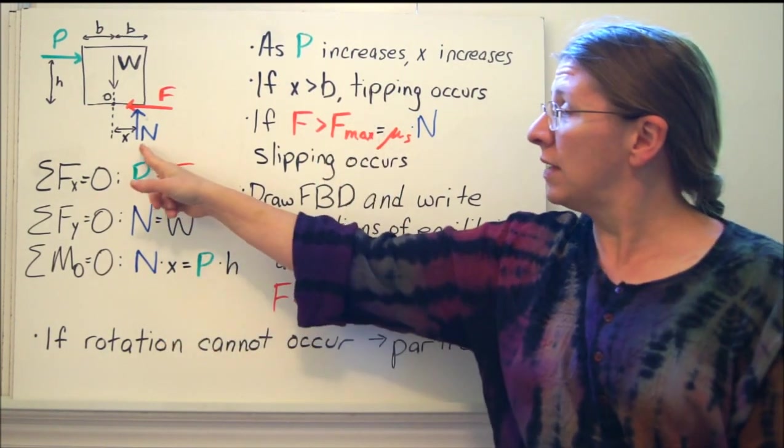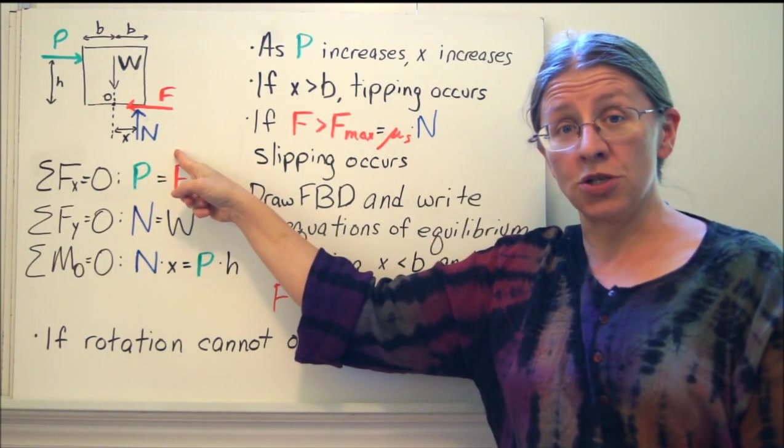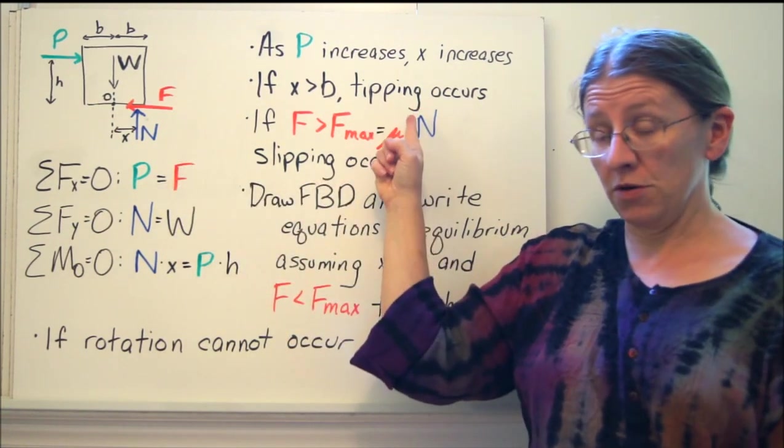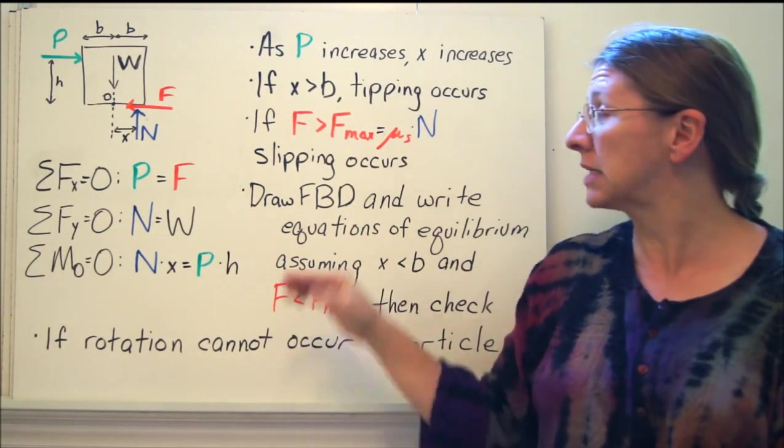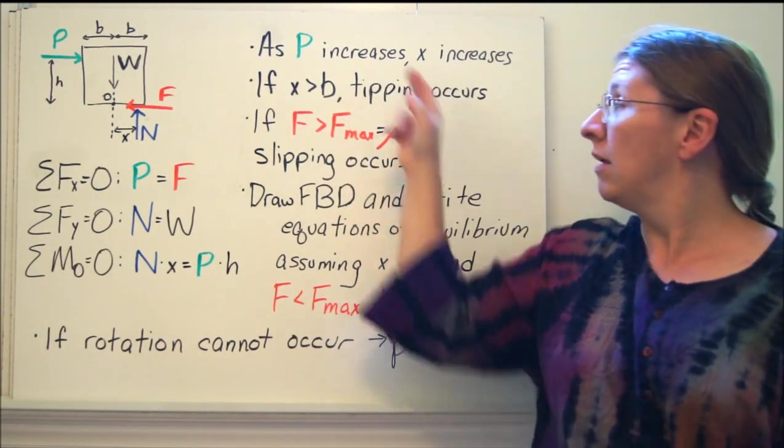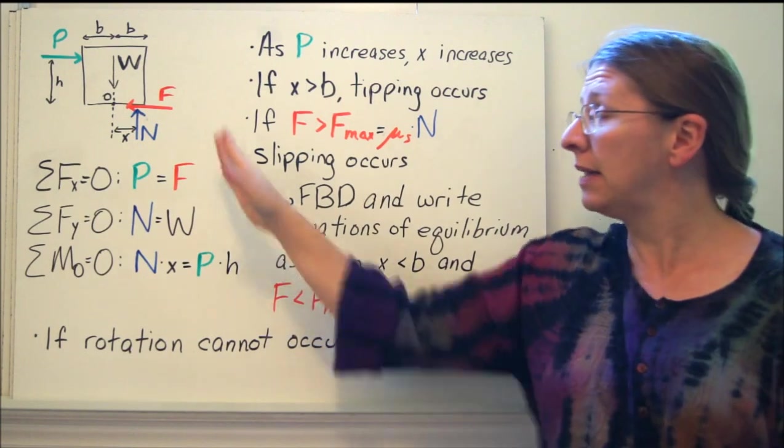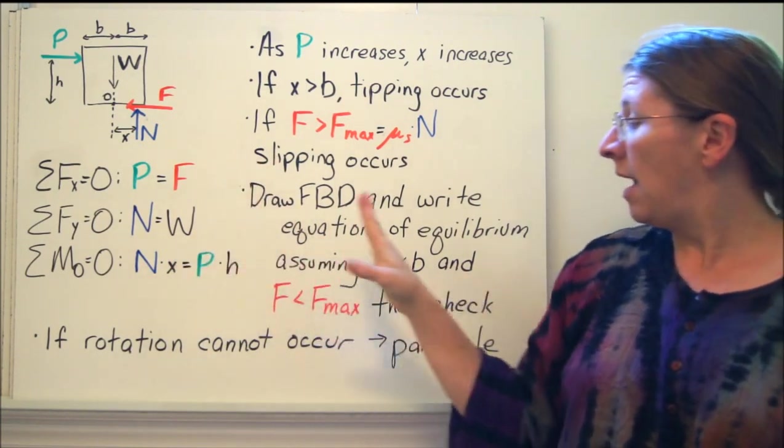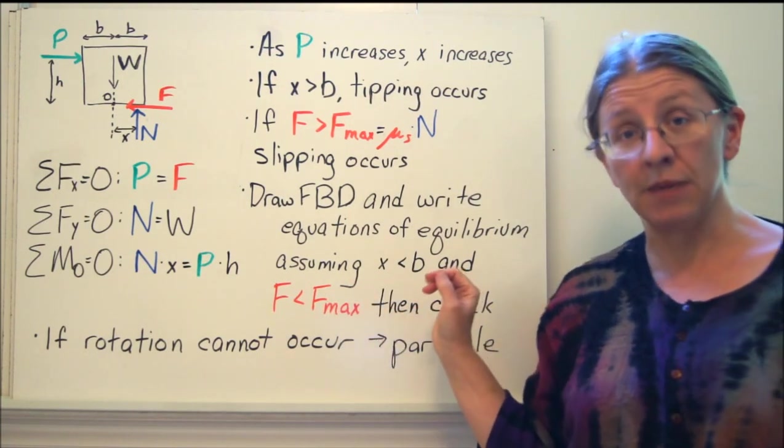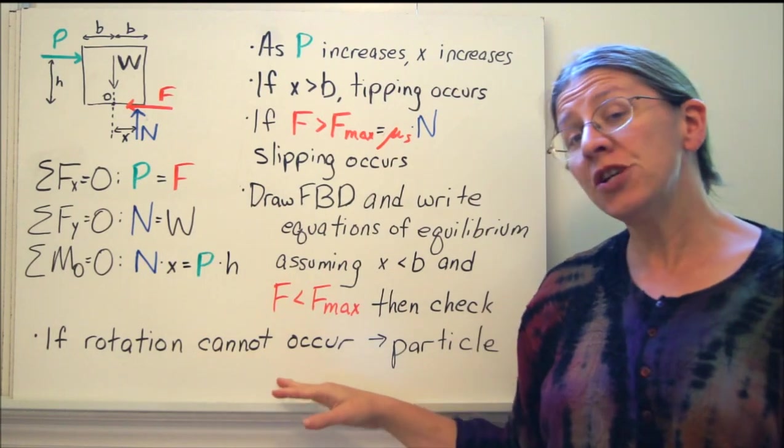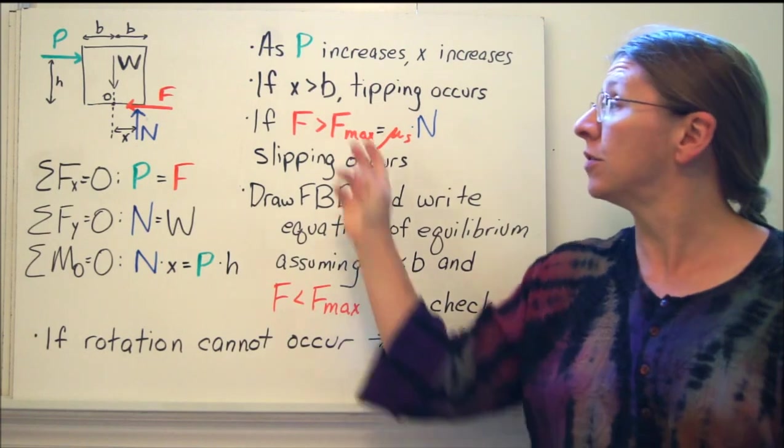Until you get to a certain point when this N has moved over this way as far as it'll go, and it can't go any further, then you have your tipping condition. If X equals B, tipping occurs. We also have the possibility now that it could slip. We could get past our maximum friction force. Then we'll have slipping. These are not both going to happen. One of them is going to happen and the other one won't. So how do we handle this? We draw the free body diagram and write equations of equilibrium for our case. We're going to assume that it's not going to tip. We're going to assume it's not going to slip. And then you have to come back and check. Did it slip? Did it tip? If rotation cannot occur, so if your box is stuck into a corner where it can't possibly tip over, then you can treat it like a particle and you don't have to worry about this.